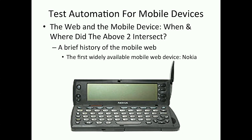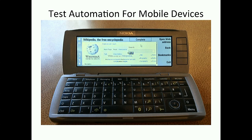Let's look at the web circa the late 90s. Here we have a different model of the Nokia Communicator with Wikipedia. The reason I'm showing this slide is because even today, like 20 years later after this kind of mobile web design happened, the same problems still exist. We see layout problems — there was no responsivity. Responsivity didn't exist at this time.